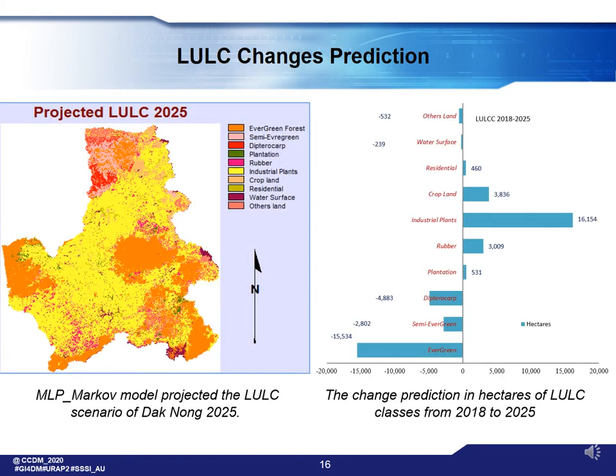This is the LULC map projected for 2025, with the change scale shown in the diagram on the right side.